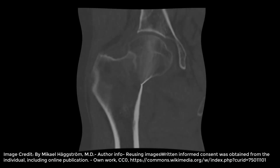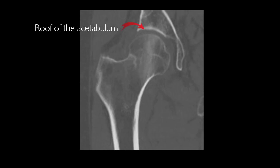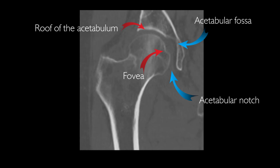A single CT scan image, coronal reconstruction, showing the roof of the acetabulum, acetabular fossa, fovea, and acetabular notch.